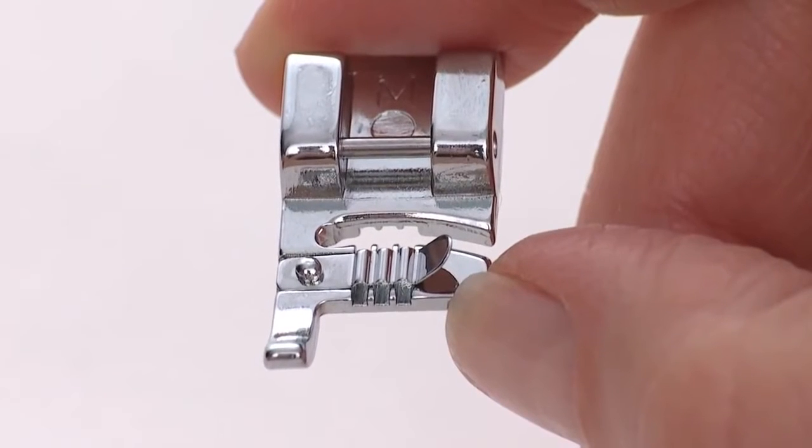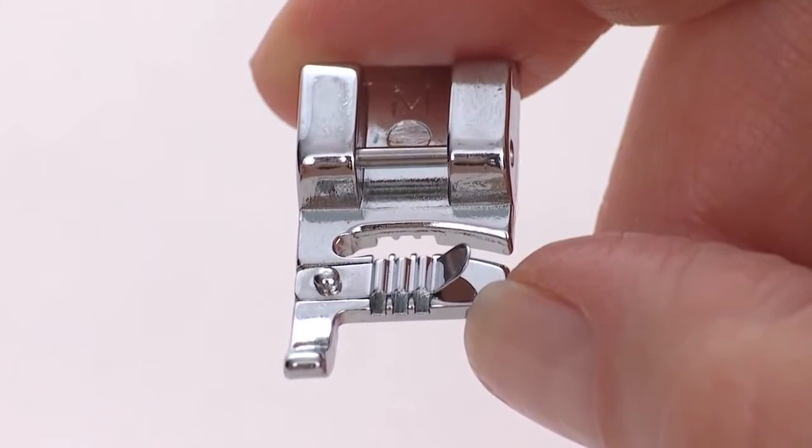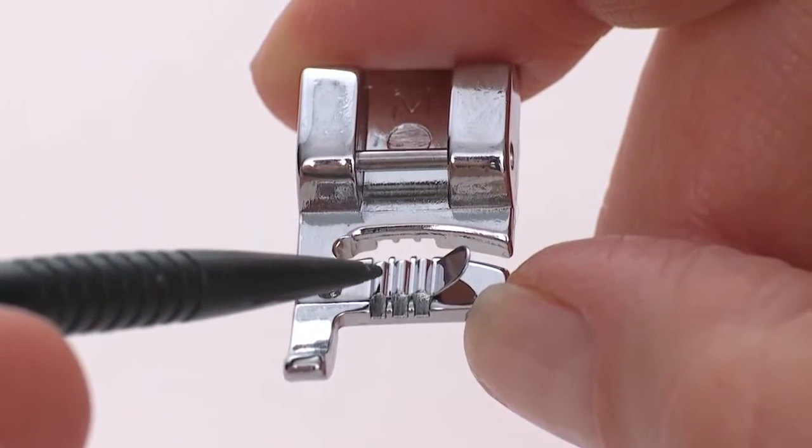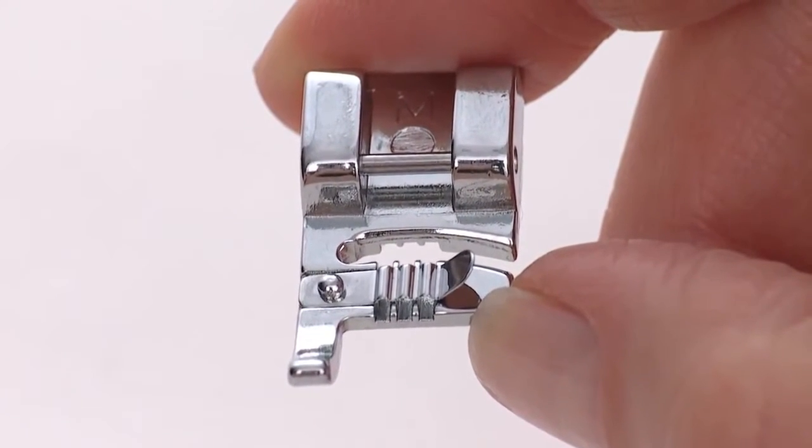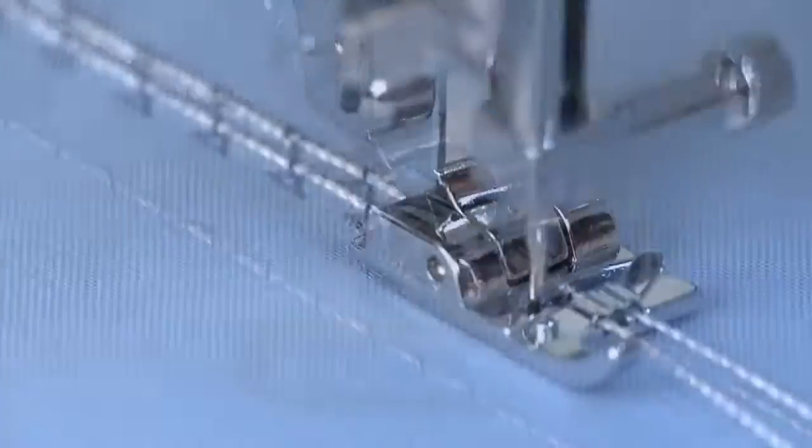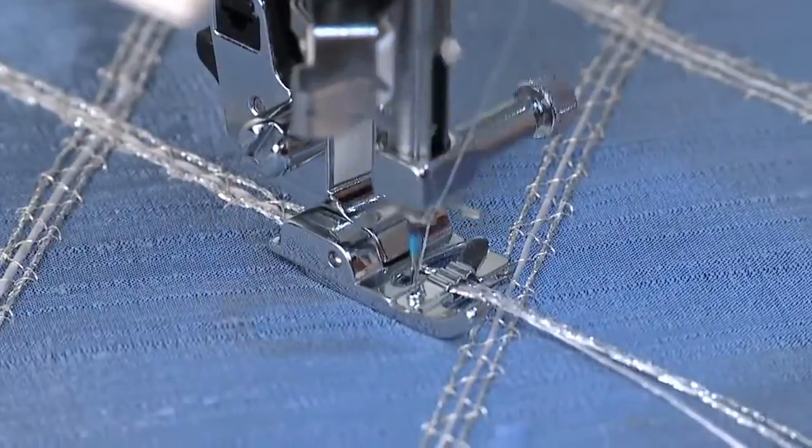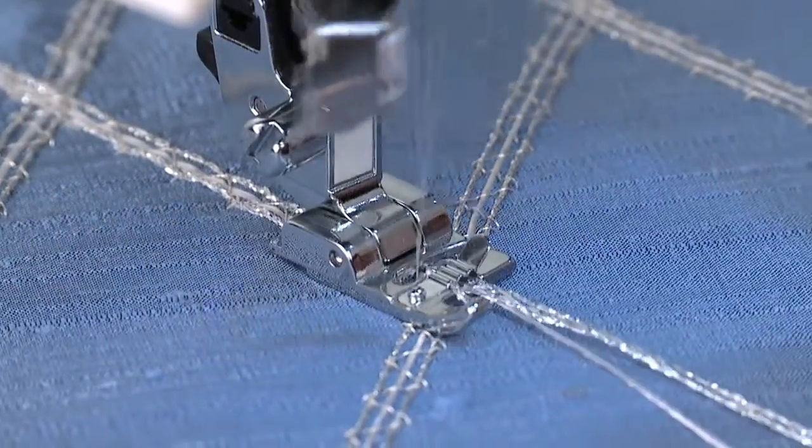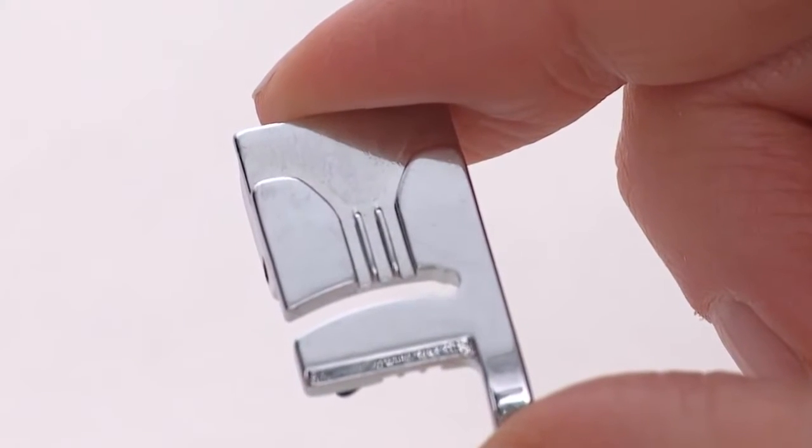This foot has a specially designed slotted guide on top. This guide can hold lightweight yarns or cords which simply slip into the guide from the side. You can use one, two or all three depending on the effect you want. The bottom of the foot has a groove which allows the cords and stitching to pass freely underneath.